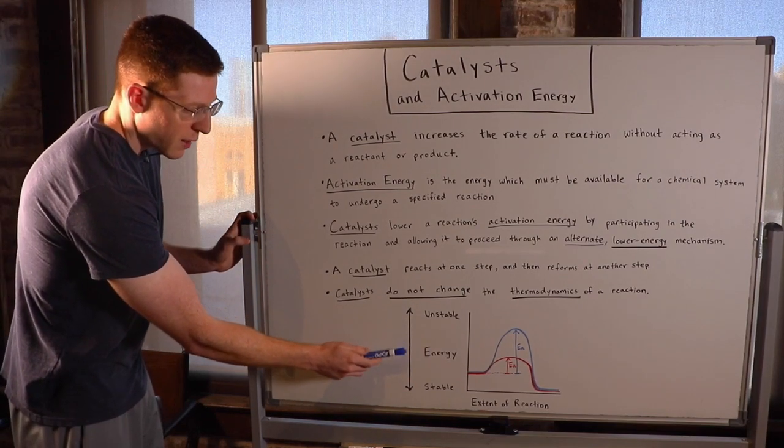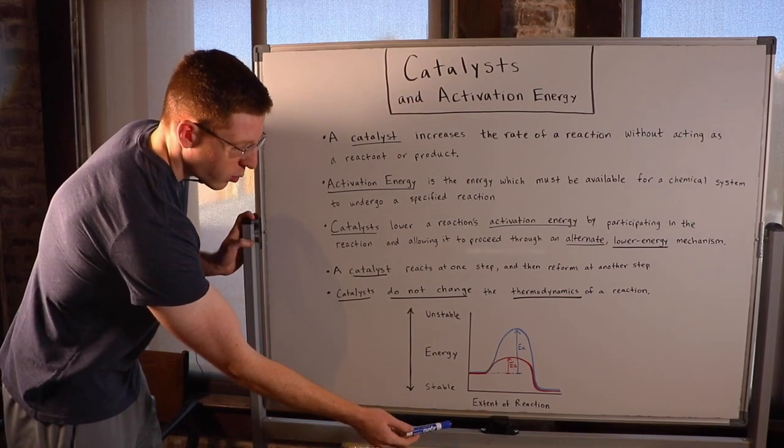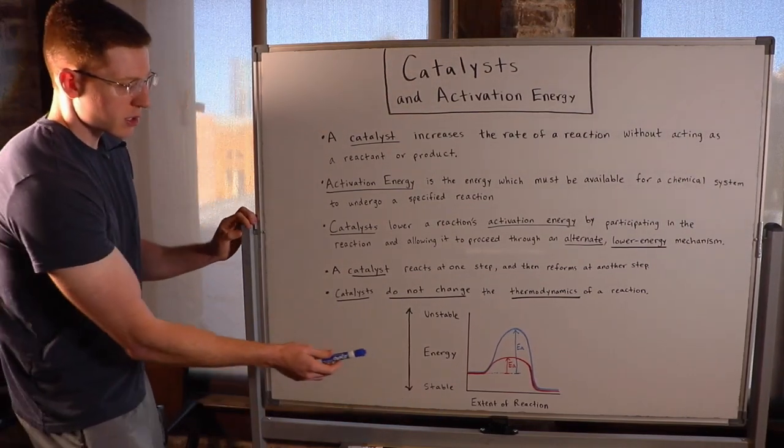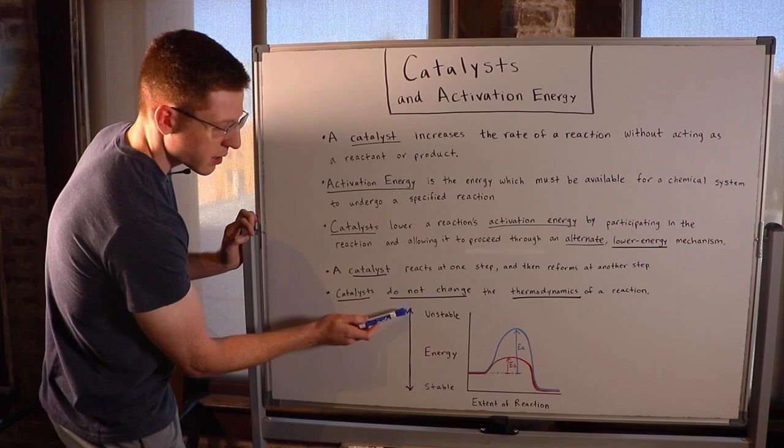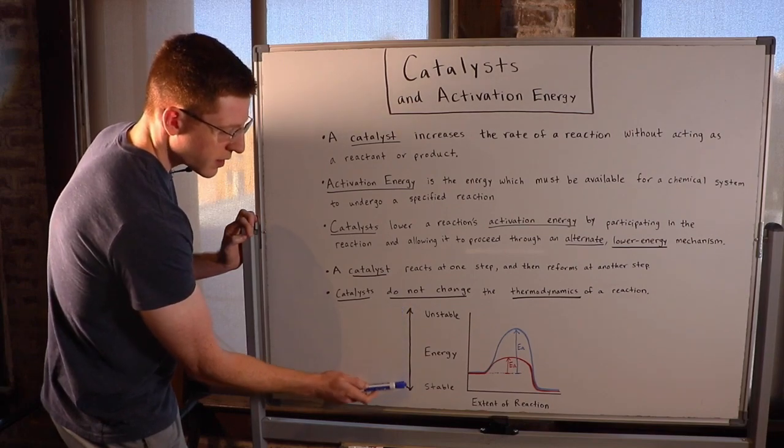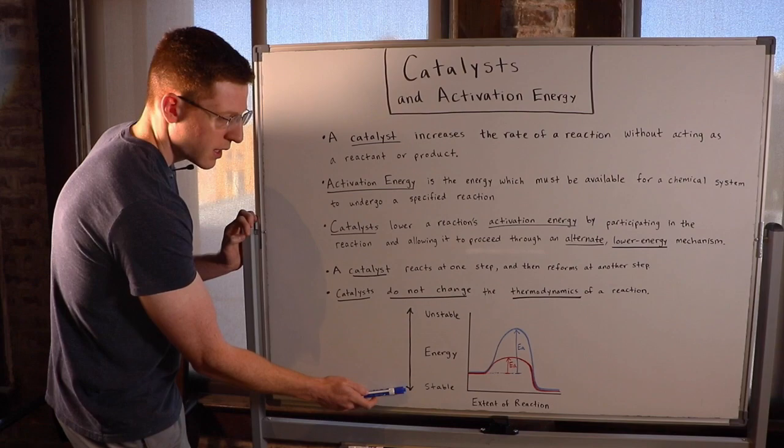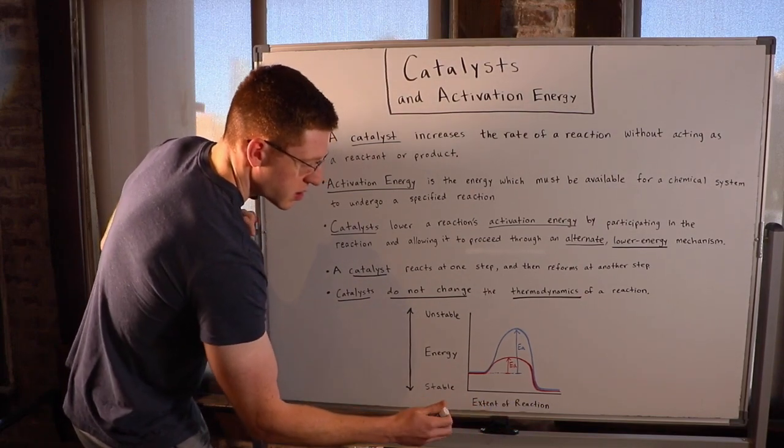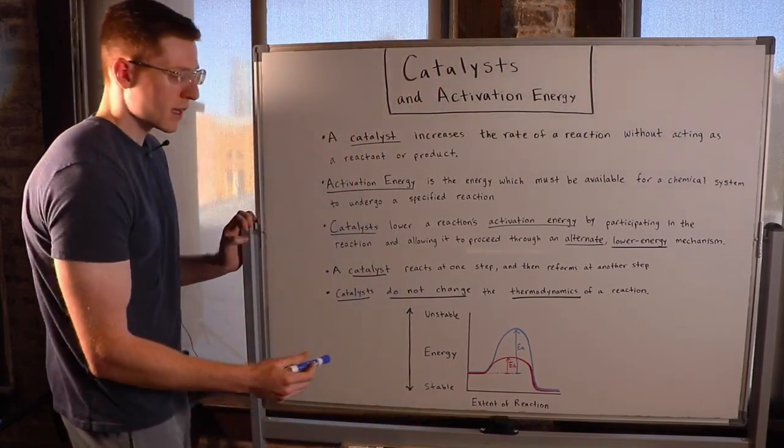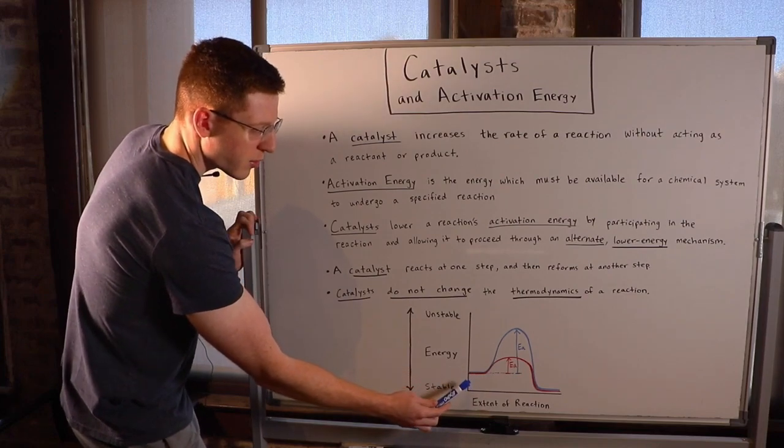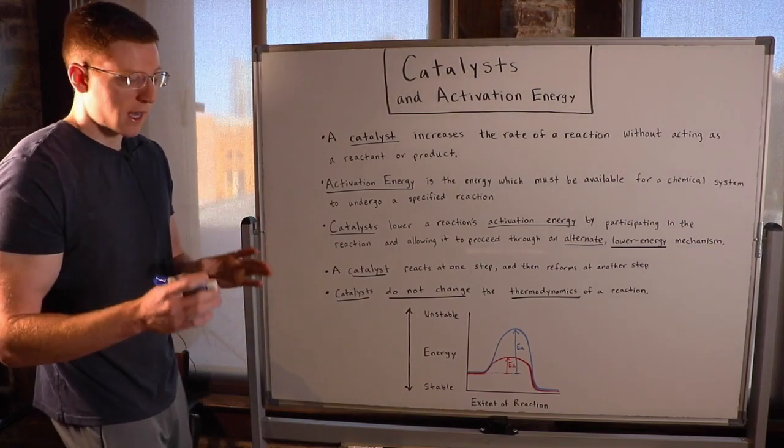So I've represented this graphically down here. You can see on the y-axis, I have energy. So up here is the highest energy, the most unstable state. Down here is the lowest energy or the most stable state. And you can see on the x-axis, this is just the extent of a reaction. And in blue here, I have a reaction coordinate without a catalyst.